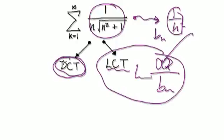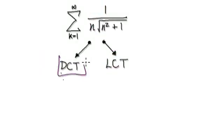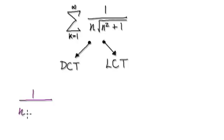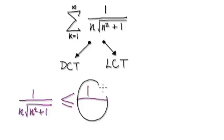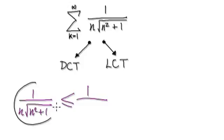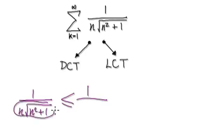Let's try and do the direct comparison test. You start out with 1 over n times root of n squared plus 1, and this will be less than or equal to 1 over something. If you look at the denominator — if you make the denominator smaller, then the new fraction will be bigger than the old one. Let's concentrate on making the denominator smaller by removing the 1.